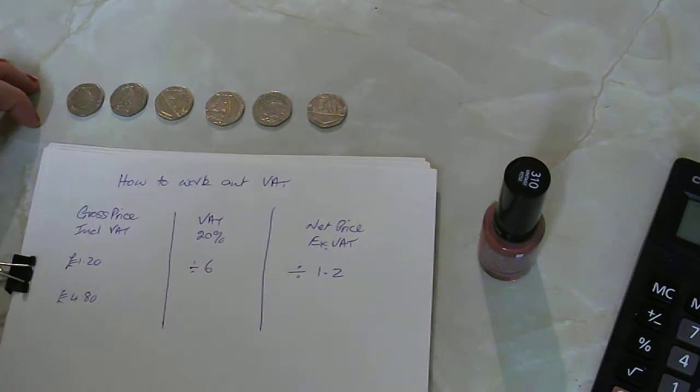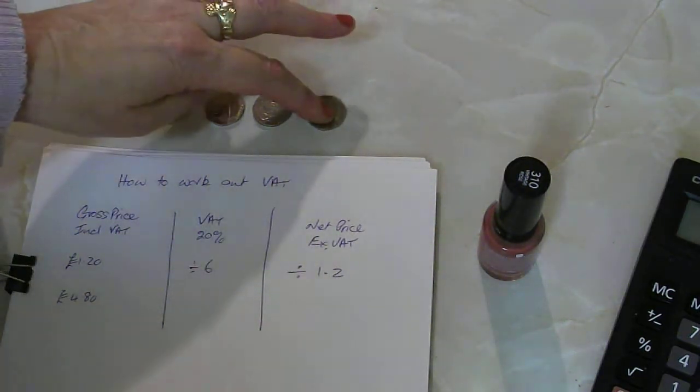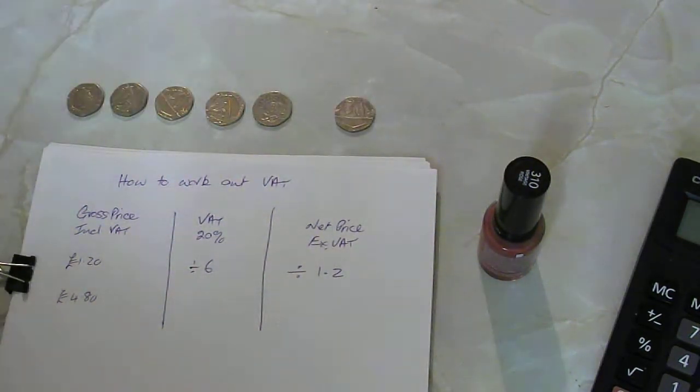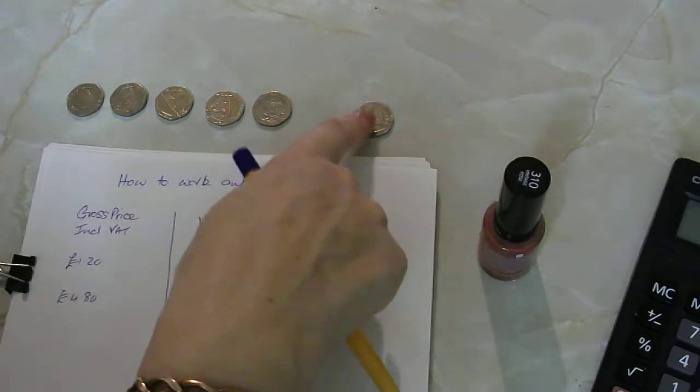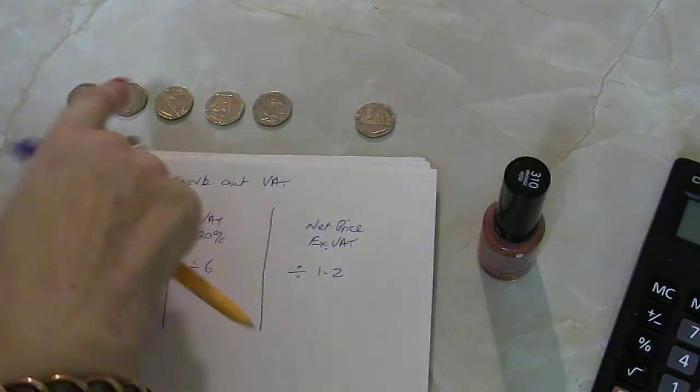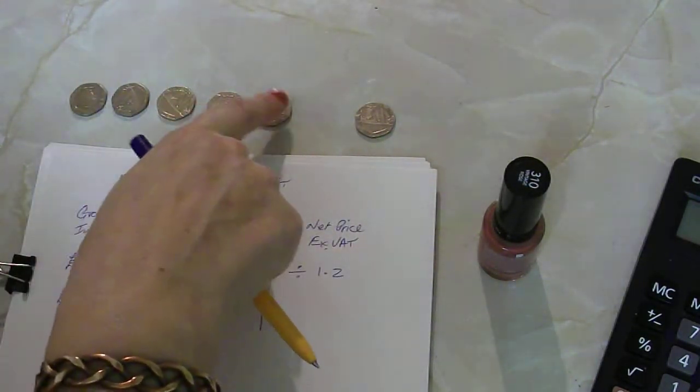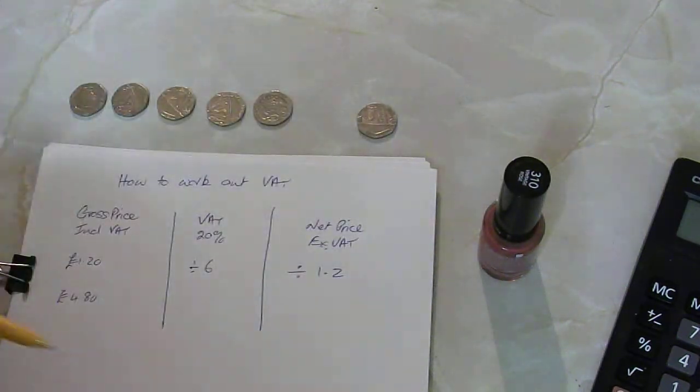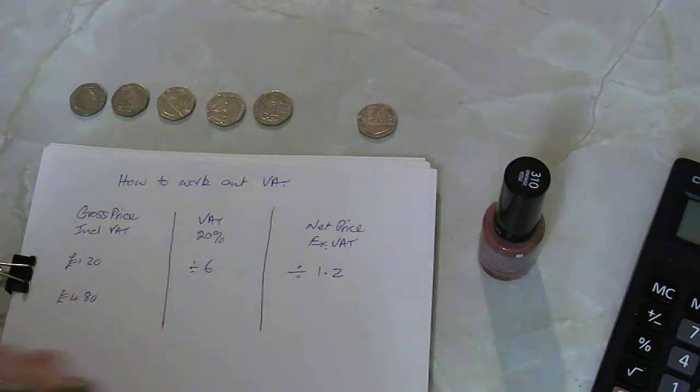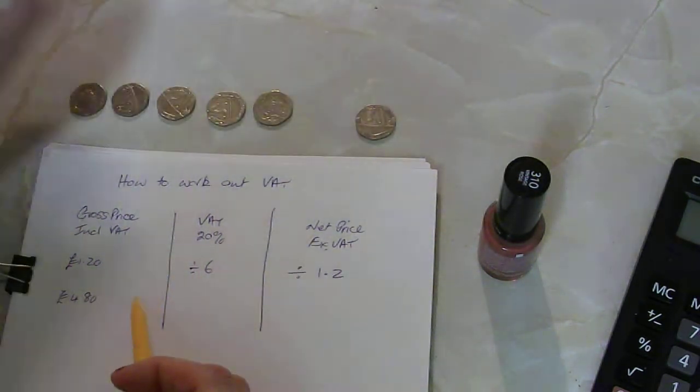So to find the VAT we need to find out what we need to divide that by. So that's what we want to find out. And you can see there's one, two, three, four, five, six and we want to find out one. So all we do is divide by six and that will give us the VAT. So £1.20 divided by six gives you 20p.